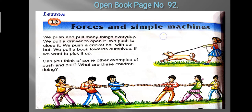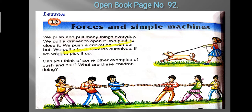Then we are going to learn about simple machines and how they make our work easier. Starting from the reading — open your book and read with me. The first paragraph: we push and pull many things every day. We pull a drawer to open it, we push to close it, we push a cricket ball with our bat, and we pull a book toward ourselves if we want to pick it up.